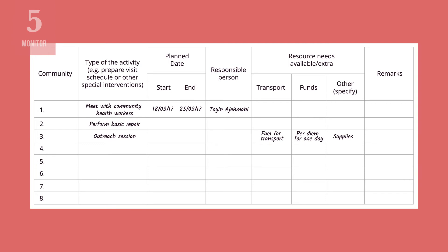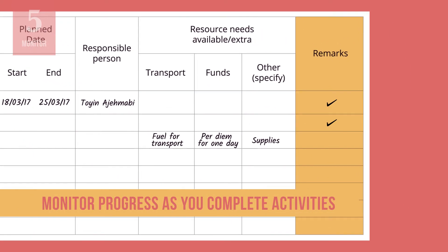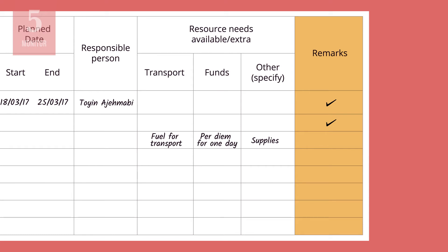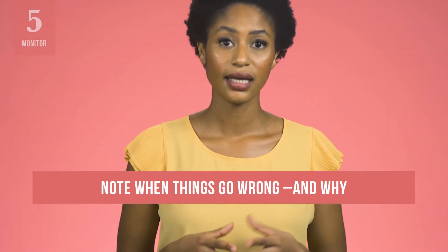Post the action plan on the wall of your health facility so that everyone is aware of the plan, and monitor progress as you complete activities. Did you accomplish what you had planned for the month? If not, what prevented you from completing an activity? Describe what happened and why in the remarks column. It is important to monitor your progress in implementing activities and note when things go wrong and why. Later, when it is time to plan again or update your action plan, you can use these observations to create even more effective plans and ultimately boost your immunization coverage.